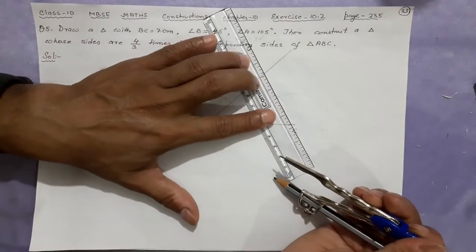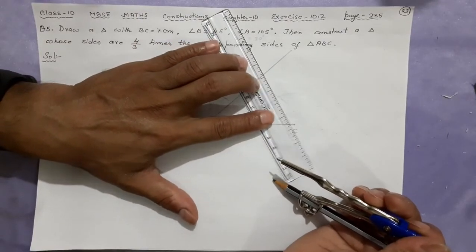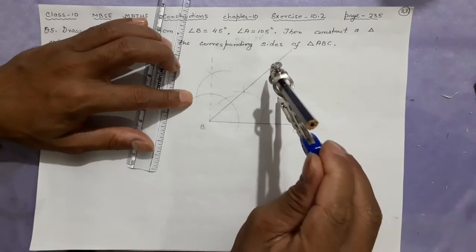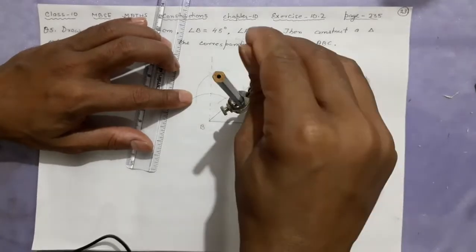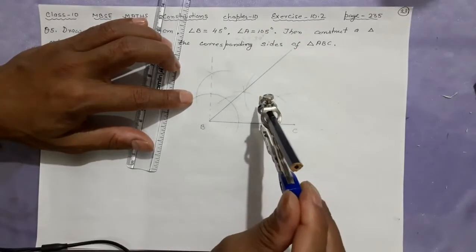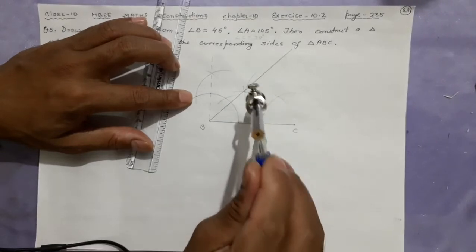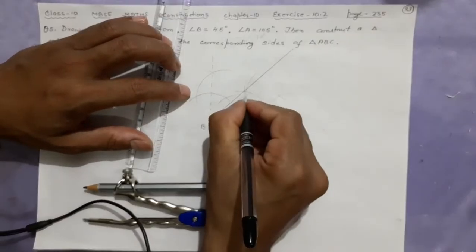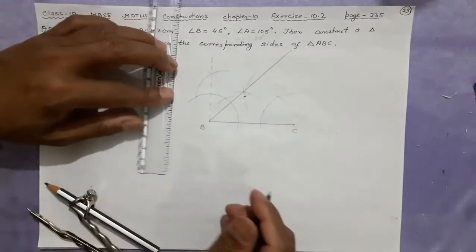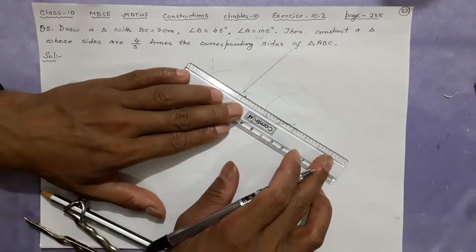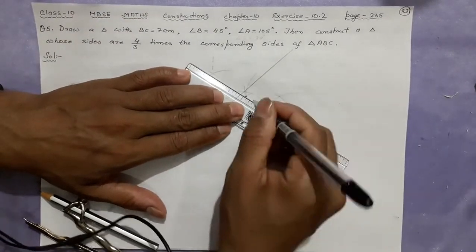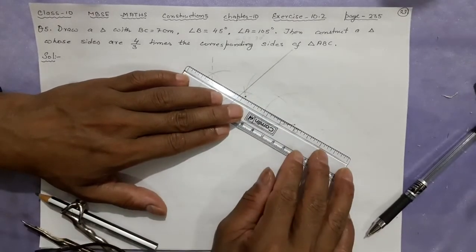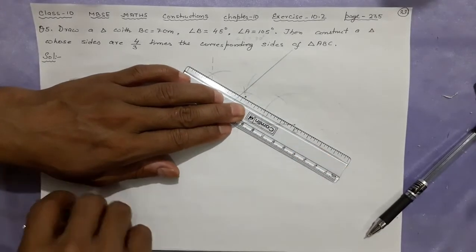Construct 60 degrees at C on this side. This is 60 degrees. From the 60-degree angle, make the bisector: put your compass, cut here once, cut here again. This gives 30 degrees. Where the 30-degree ray meets the 45-degree ray will automatically be your point A.